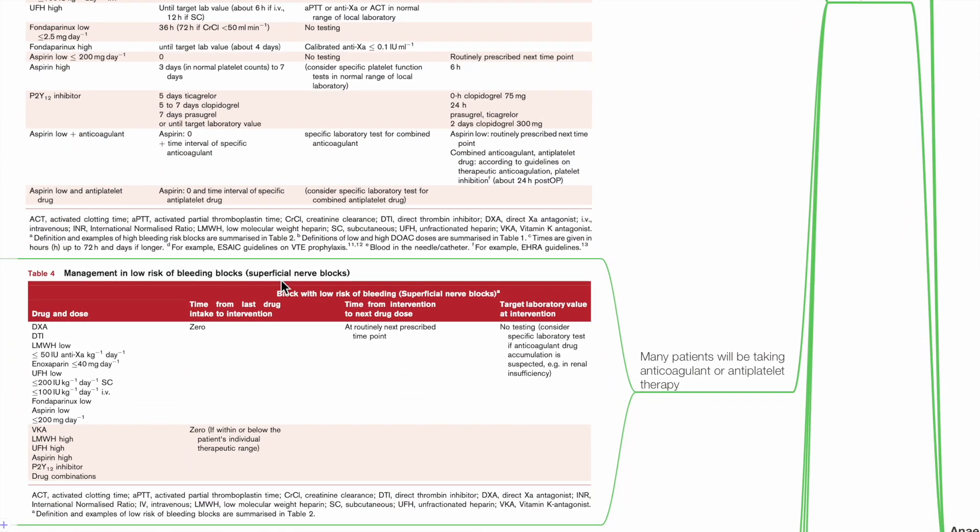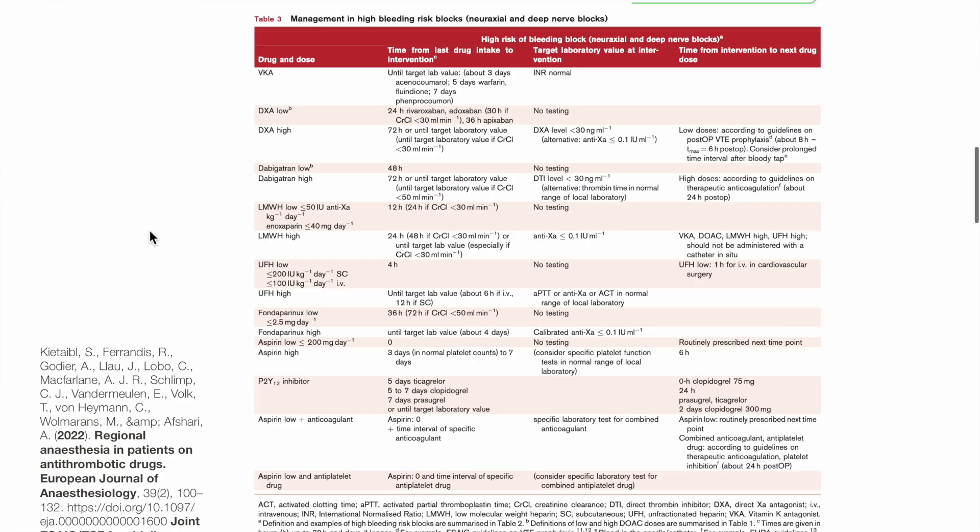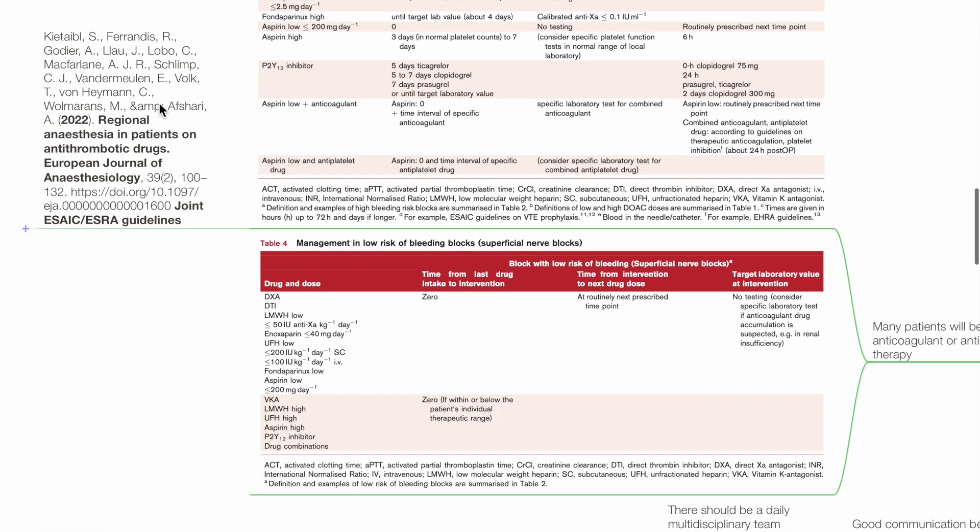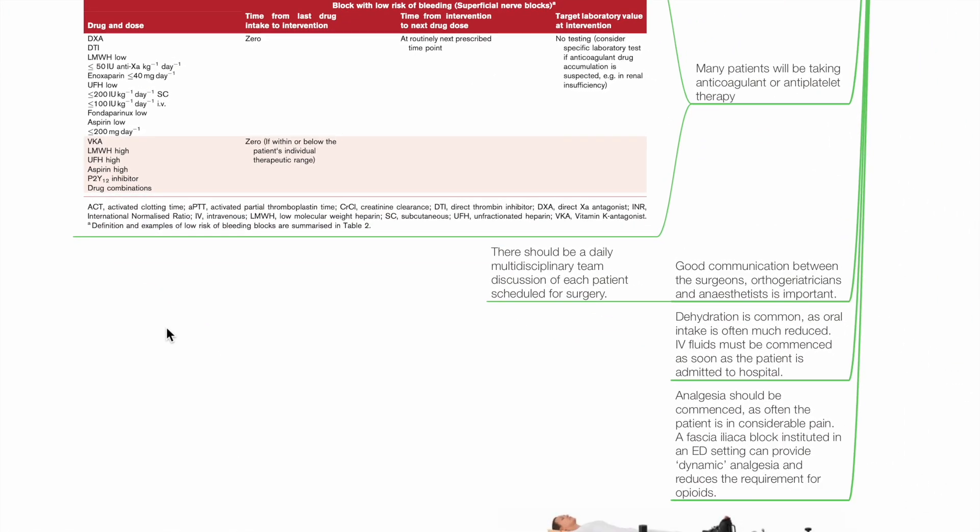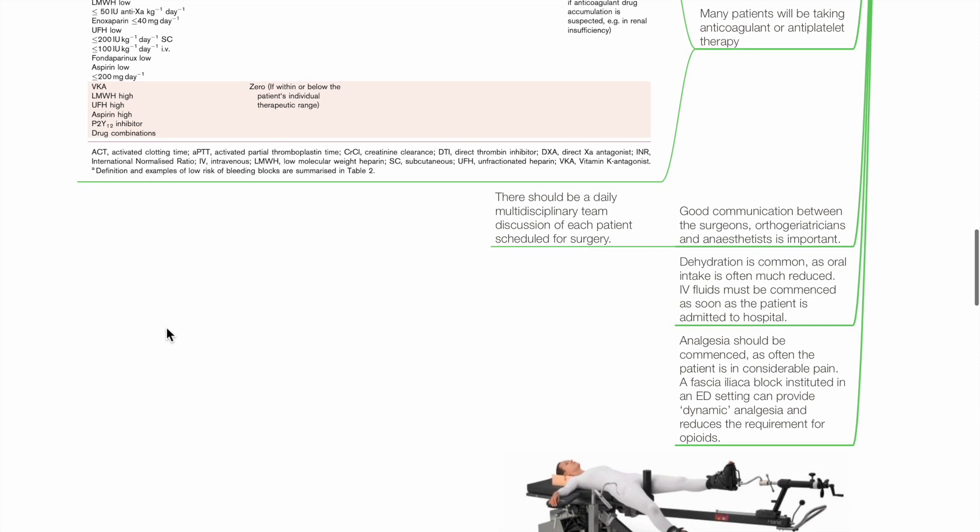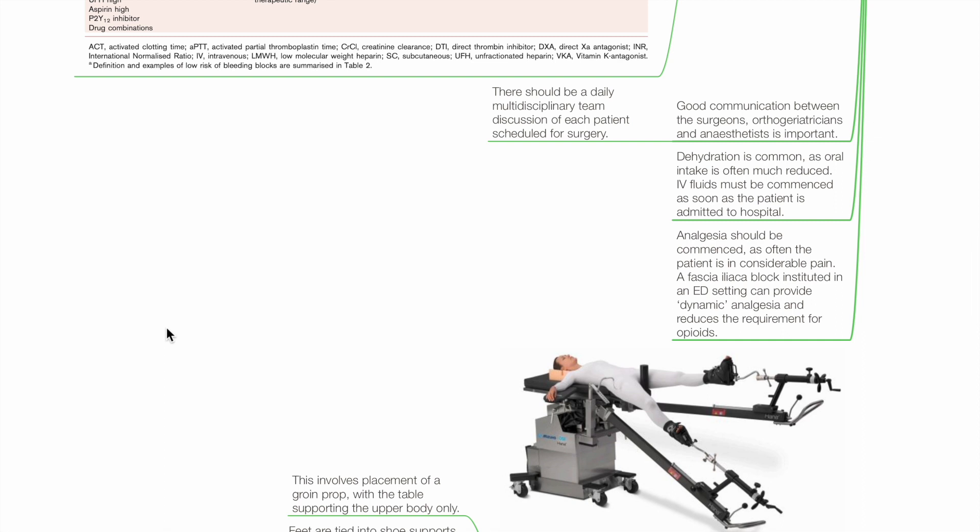Many patients will be taking anticoagulants or antiplatelet therapy. Based on the ASFRA guidelines 2022, management in neuraxial and deep nerve blocks and management in low-risk bleeding blocks such as superficial nerve blocks in patients taking anticoagulants or antiplatelets are included here for completion. Good communication between the surgeons, orthogeriatricians and anesthetists is important. There should be a daily multidisciplinary team discussion of each patient scheduled for surgery. Dehydration is common as oral intake is often much reduced. IV fluids must be commenced as soon as the patient is admitted to hospital. Analgesia should be commenced as often the patient is in considerable pain. Fascia iliaca block in ED can provide dynamic analgesia and reduces opioid requirements.